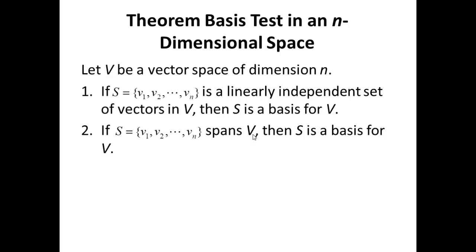So if V is an n-dimensional vector space and S is a set with n vectors. To prove that S is a basis for V, all we have to do is either we prove that S is linearly independent or we prove that S spans V. We do not have to prove both. Any one of these would suffice in our proof that S is a basis for V. Interesting.